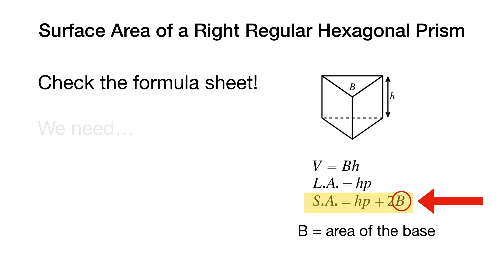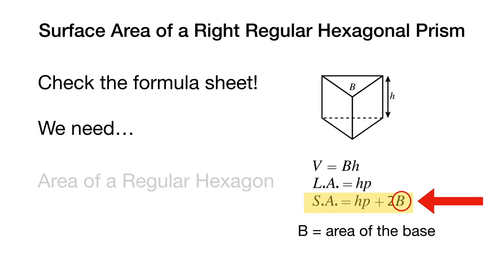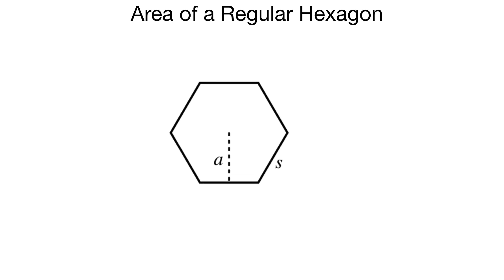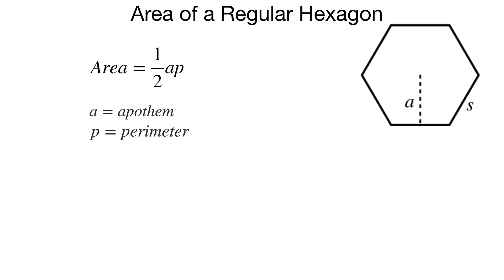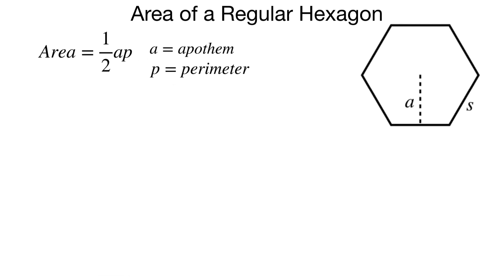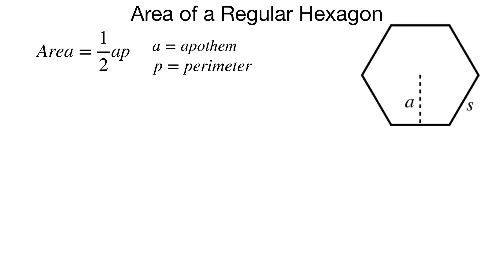Let's see how this works. We're going to need the area of that regular hexagon. Here is a regular hexagon, and there are some new words here perhaps. The area of this hexagon, or any regular polygon, is one half AP, where A is the apothem and P is the perimeter of the polygon. What I'm discussing now is true for any regular polygon, not just the hexagon.